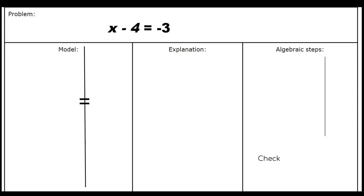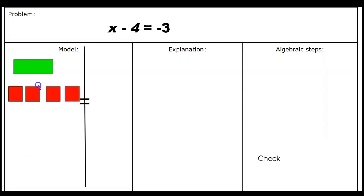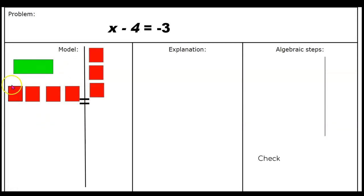Here is what X minus 4 equals negative 3 looks like. We have a green algebra tile and four red negative algebra tiles on the left side of the equal sign. On the right side we have three red tiles. This gives us X minus 4 equals negative 3.